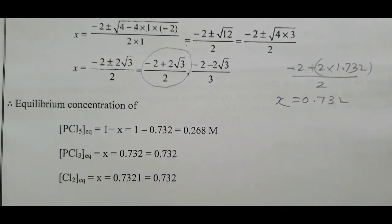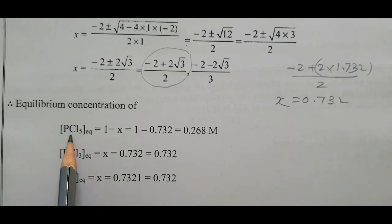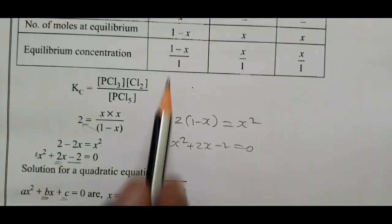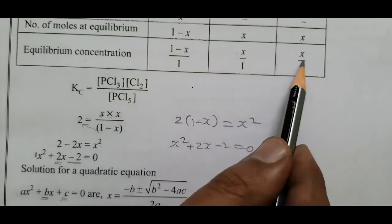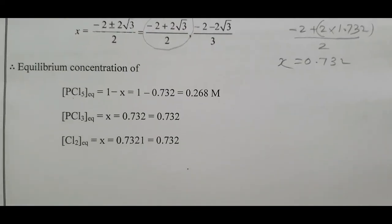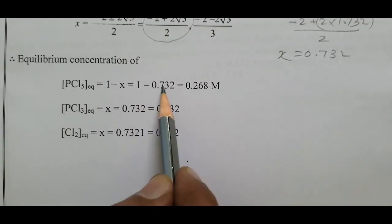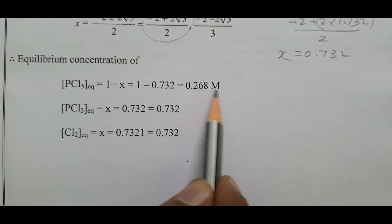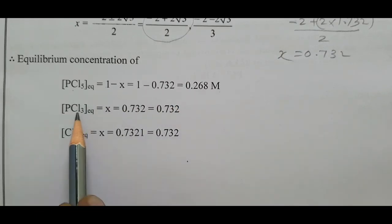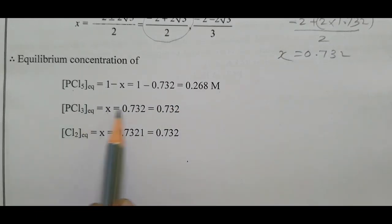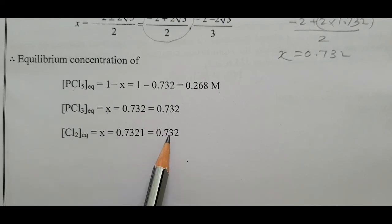Therefore, equilibrium concentration of PCl₅ = 1 − x = 1 − 0.732 = 0.268 M. PCl₃ equilibrium concentration = x = 0.732 M. Cl₂ equilibrium concentration = x = 0.732 M.